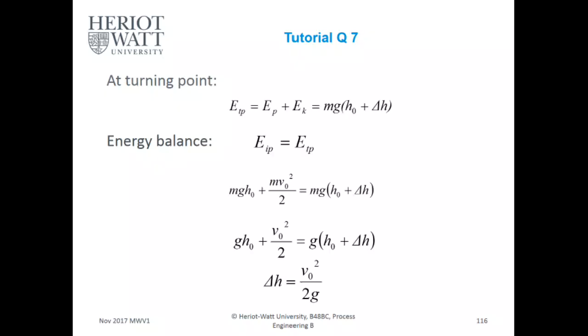At the turning point, E turning point equals Ep plus Ek equals mgh0, plus the change in h, your change in height. And we know that energy at the initial point and at the turning point equal each other.